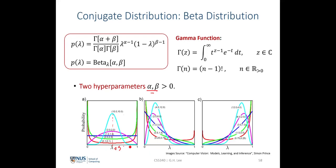If we are confident that lambda will take a small value, we would choose alpha and beta as 0.25 and 0.75 respectively — giving higher probability to small lambda values. In the case where we have no prior knowledge of lambda, we assign alpha and beta both to 1, giving a uniform distribution where lambda is equally likely to take any value from 0 to 1.